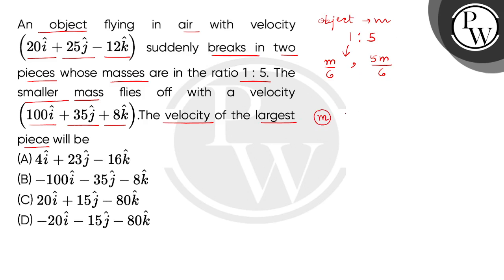We can also see this in the diagram. Let this be mass m, and this is moving with velocity v. We have given the equation 20i cap plus 25j cap minus 12k cap, where i, j, and k are unit vectors along x-axis, y-axis, and z-axis respectively.